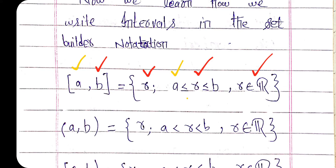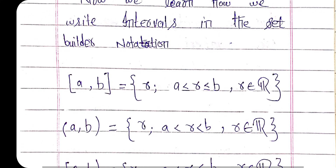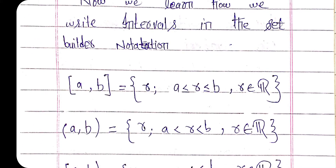Now we move towards the set-builder notation of the open interval. In the case of the open interval, the boundary points are not included. This open interval represents a set where r belongs to the real numbers and r is strictly between a and b, but a and b are not included. That is why we use strictly greater than and strictly less than notation, not equal to.